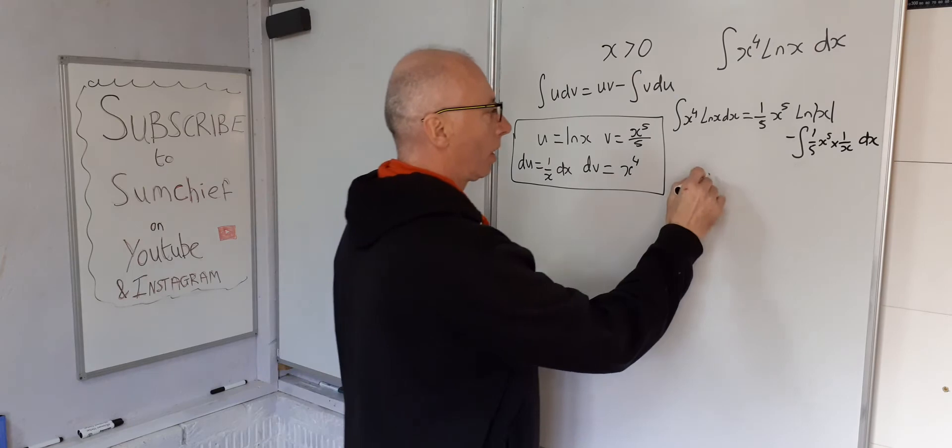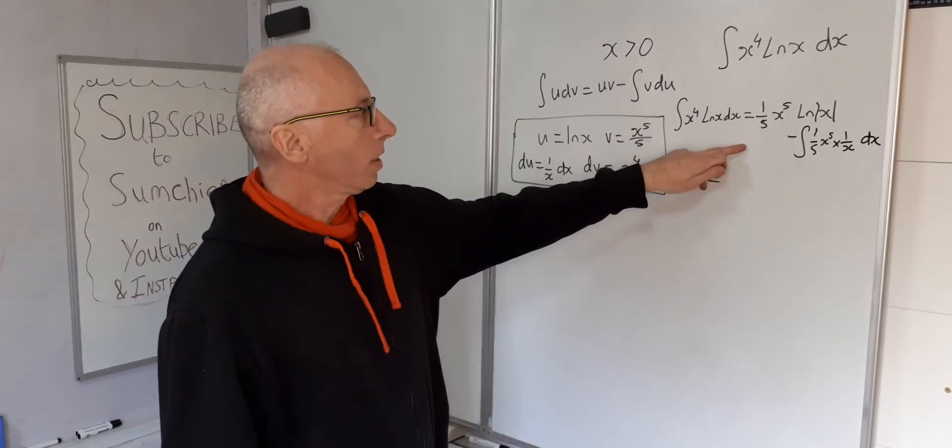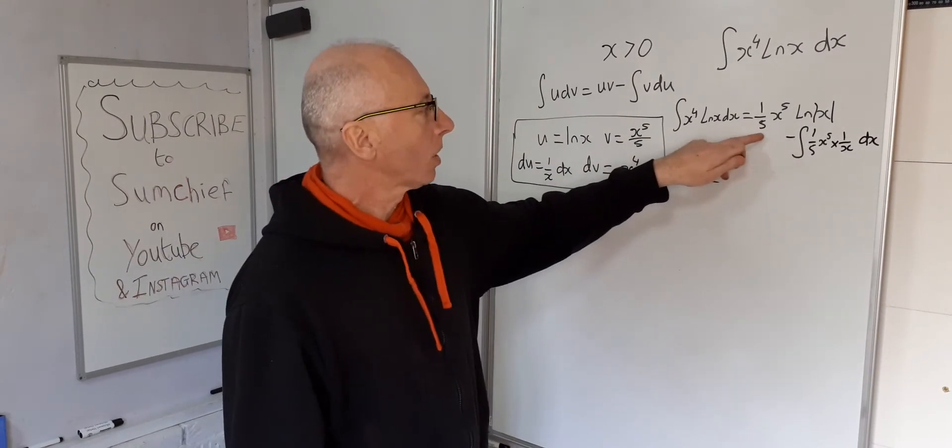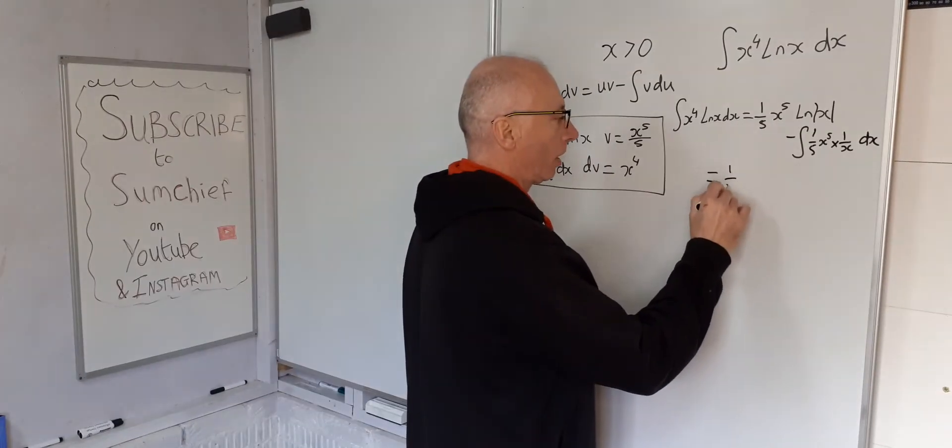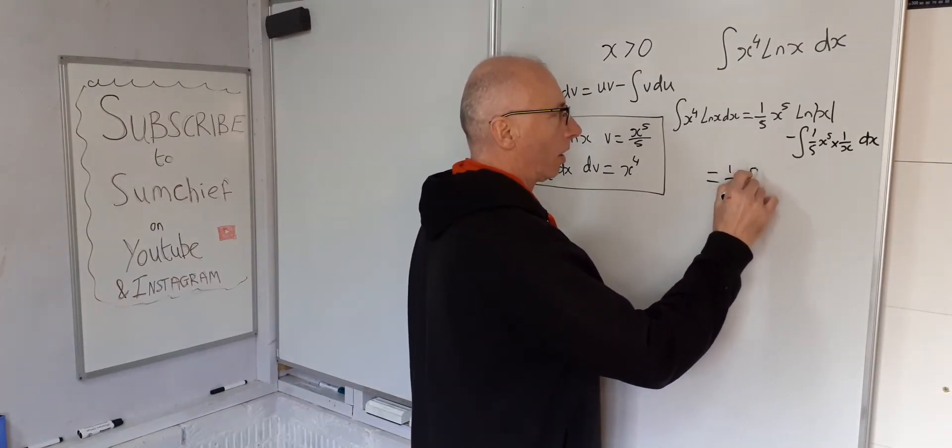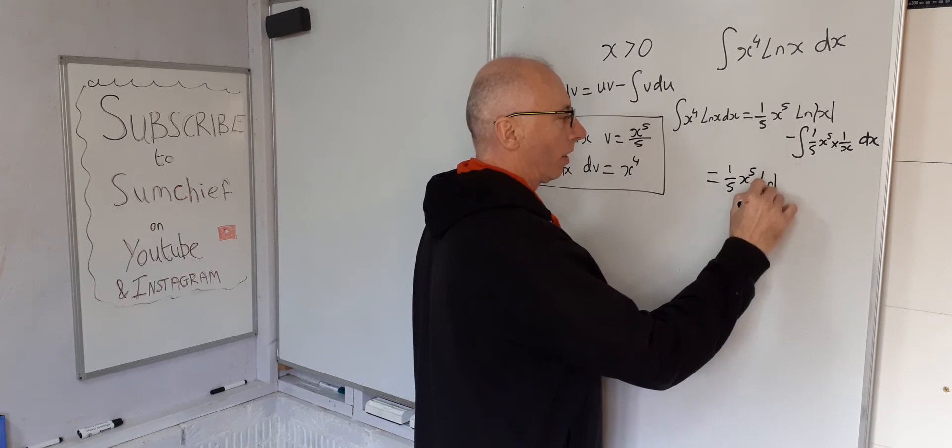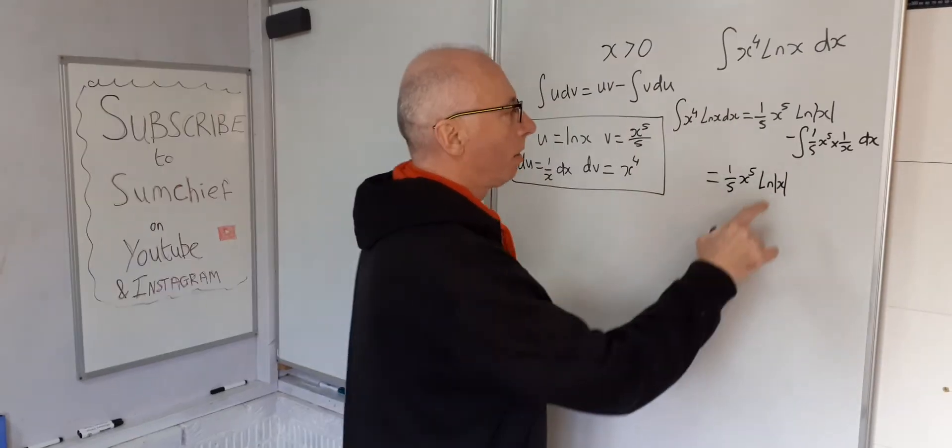Okay, so let's simplify this up a little more. So 1 over 5 x to the 5, that's fine. And then x, that's fine. Minus.